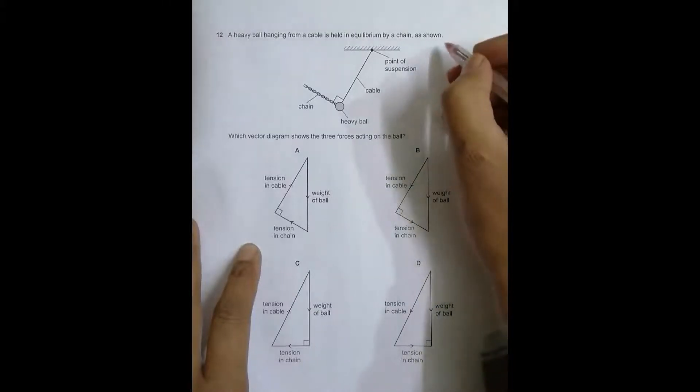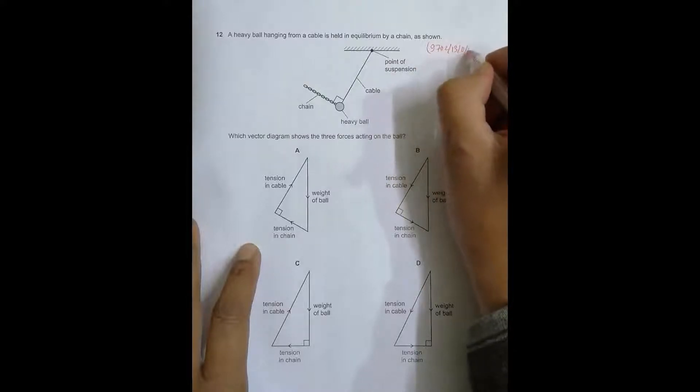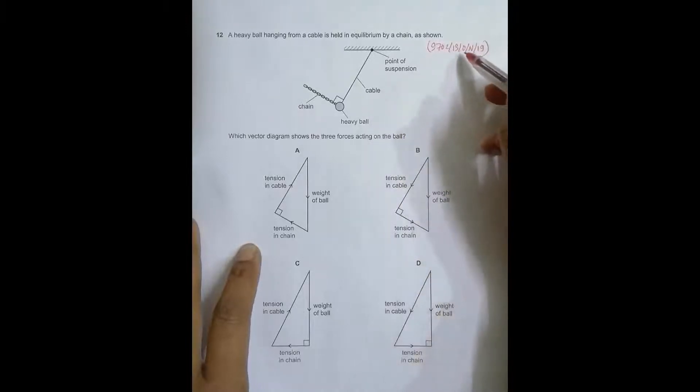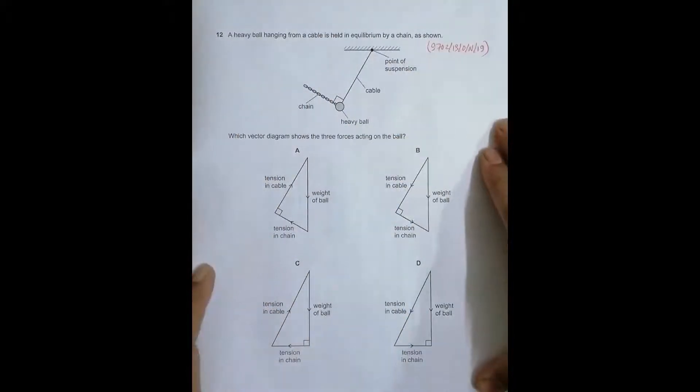Hello folks, today I have a question. Let me write the code here: it is 13019, so it is 2019 October November Paper 13, and the question number is 12. This question is concerned